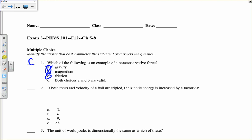Mass and velocity of a ball are tripled. Kinetic energy is increased by a factor of what? Kinetic energy is one-half mv squared. If I triple my velocity and triple my mass, it gives me a factor of 3 times 9, which is 27. So that's d.